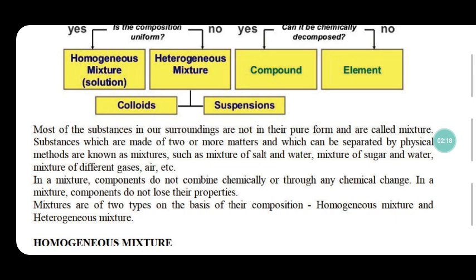What is a mixture? When substances get mixed, we can call it a mixture. For example: a mixture of sand and stone, or a mixture of water and oil. In a mixture, components do not combine chemically or through any chemical change, and the components do not lose their properties.